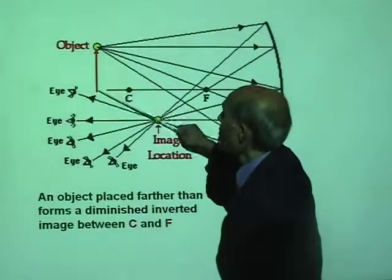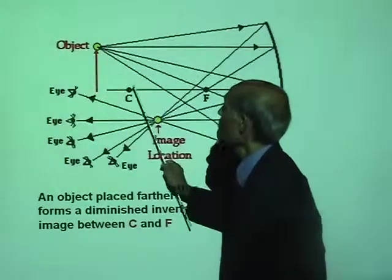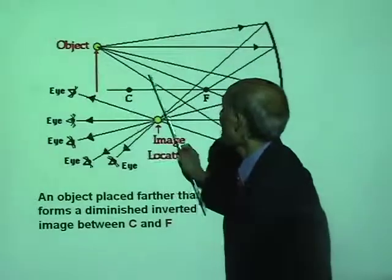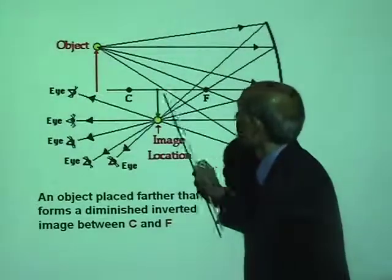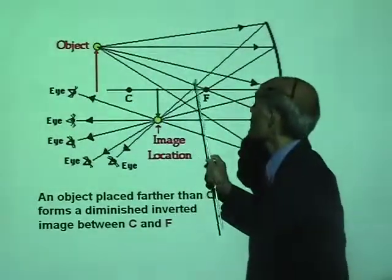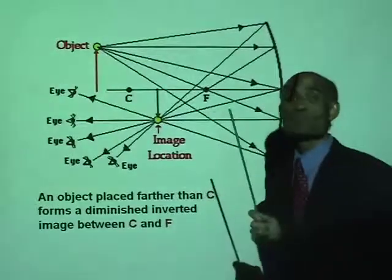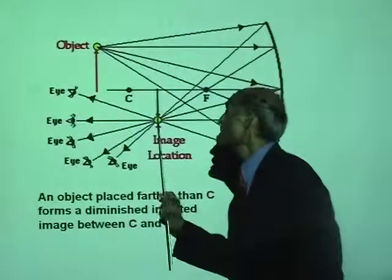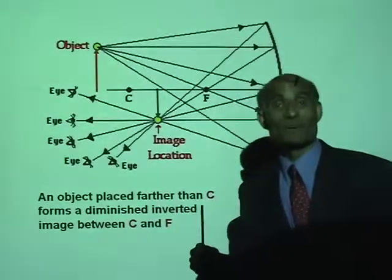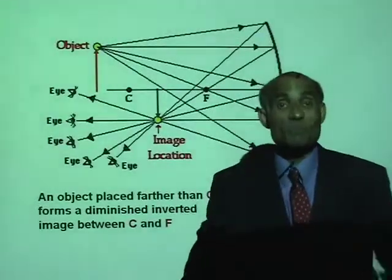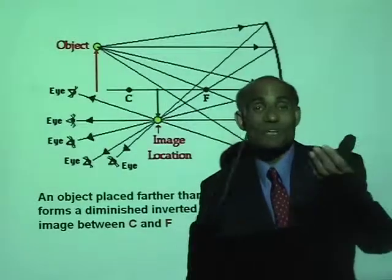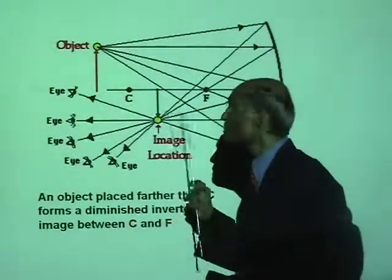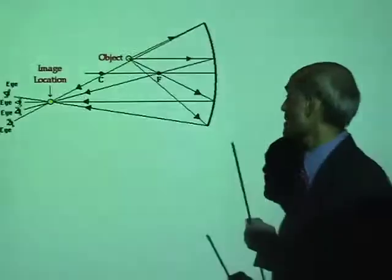If you keep an object beyond the center of curvature, the image of that object will be formed between the center of curvature and the principal focus. And look at the image — the image is upside down. Just like in the case of the pinhole camera, the image was upside down.